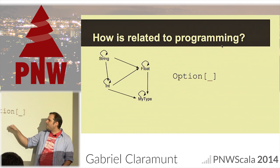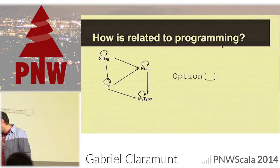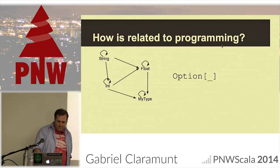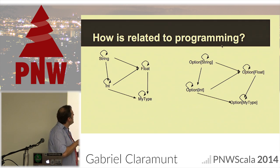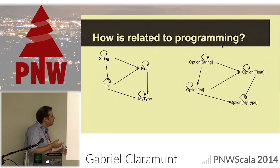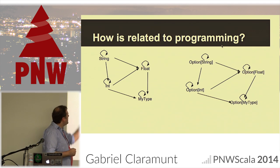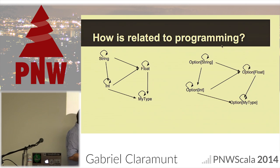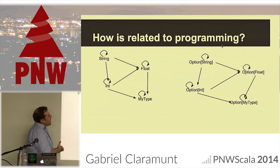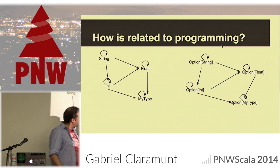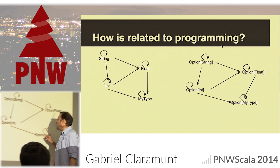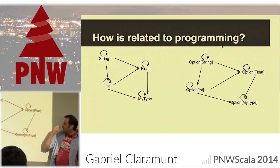A type constructor is actually an endofunctor. Let's say I have my program — types and functions between types — and now instead of returning direct types my functions return Options because I might return null. I want to write all my program using Options instead of just using the direct type.